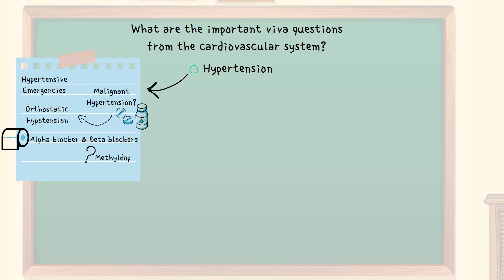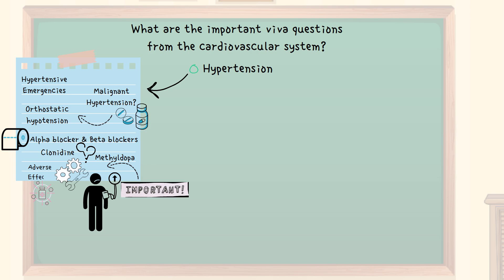What is methyldopa? What is clonidine? What is their mechanism of action? What is the importance of methyldopa in the treatment of hypertension? What are the various adverse effects of clonidine?